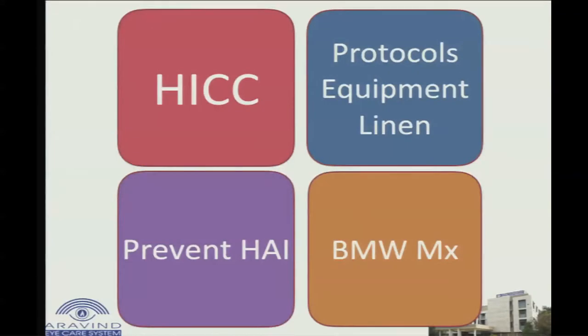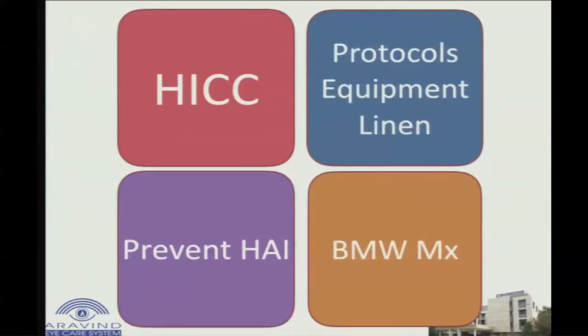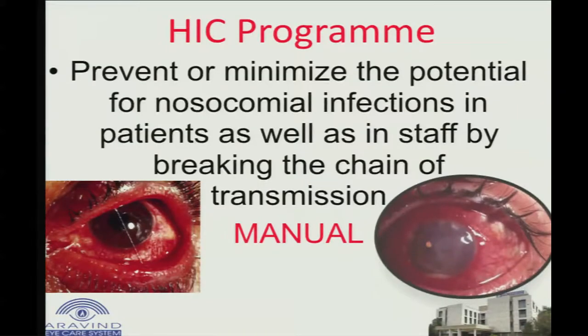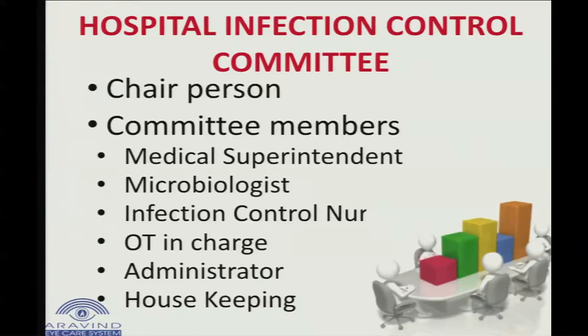This is the fifth chapter, with four components. You need a hospital infection control committee — whether it's a one-doctor or 130-doctor hospital. There should be protocols for managing man, material, and linen. Most importantly, you need to prevent hospital-acquired infections. When we think of hospital-acquired infections, we think of endophthalmitis, but we must not forget that acute conjunctivitis can also be a hospital-acquired infection. Biomedical waste management is a mandated requirement regardless of level. The goal is to prevent or minimize nosocomial infections in patients, staff, and attendants.